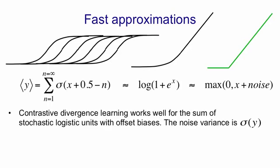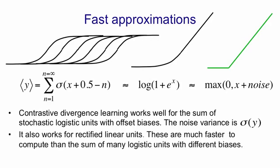Contrastive divergence learning works well for the sum of a bunch of stochastic logistic units with offset biases. And in that case, you get a noise variance that's equal to the logistic function of the output of that sum.